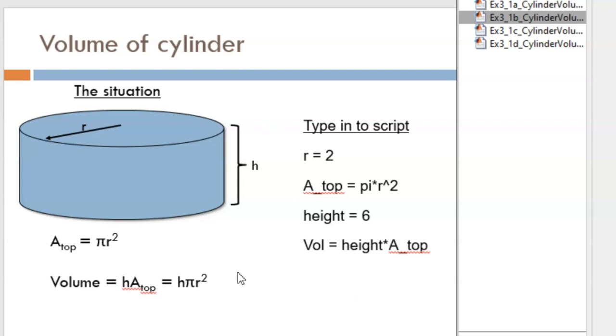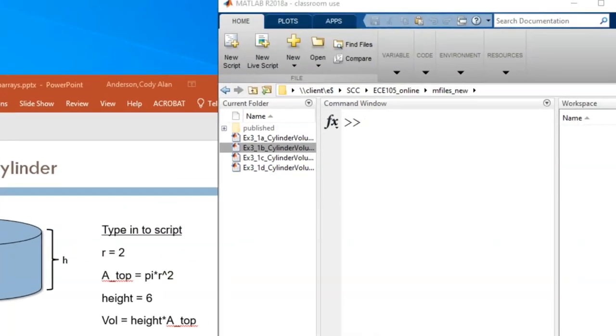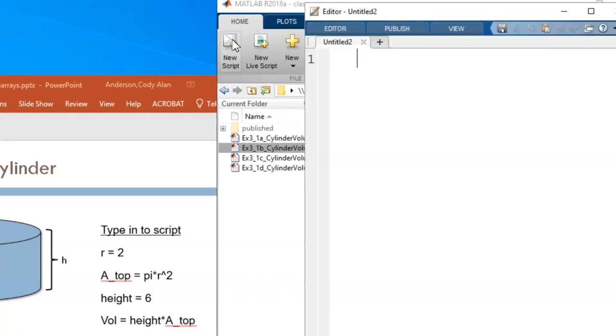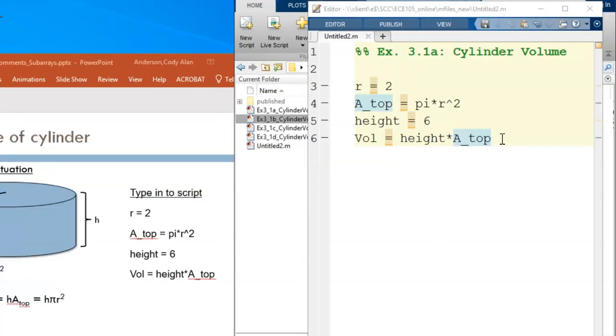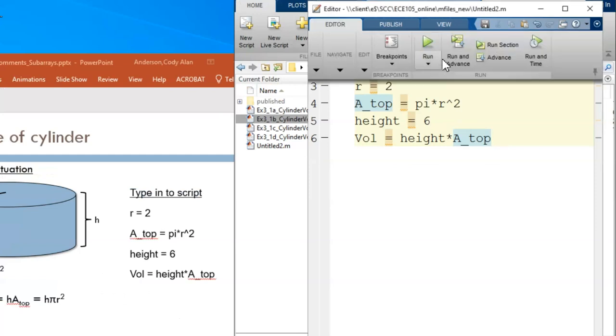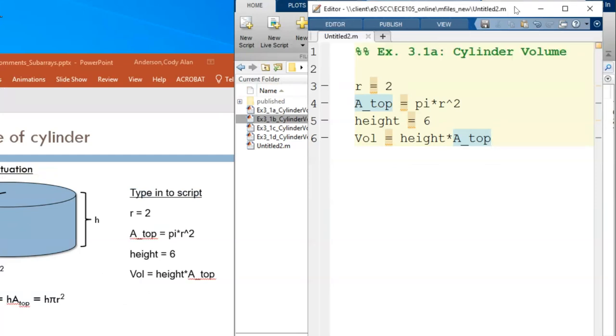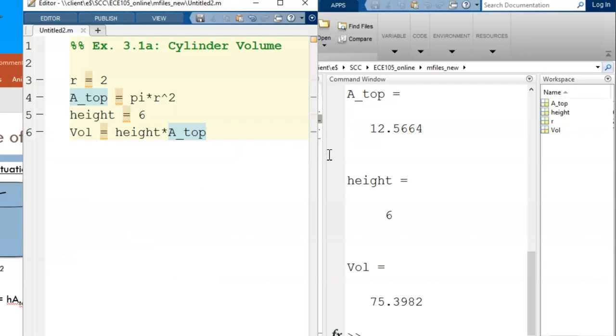Now let's rework this volume of cylinder exercise, but in a script. Let's open a new script in MATLAB, then type in the four commands you see here. Pause the video until you accomplish this. Now run your script. Hopefully you get the same results seen here. If not, make some edits and try again.